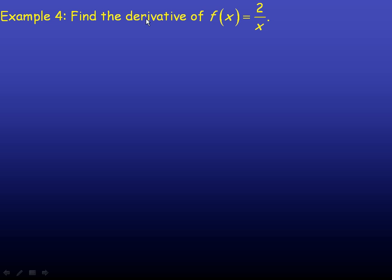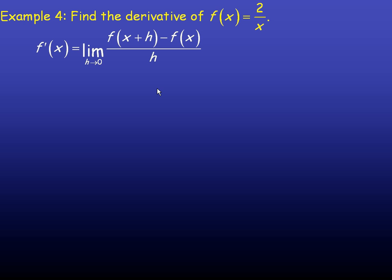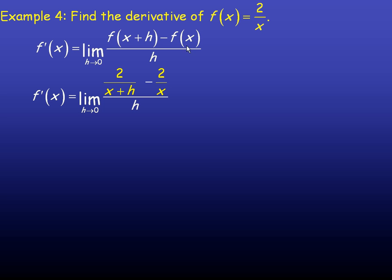In example 4, we're asked to find another derivative, of a different kind of function — a rational function, 2 over x. I'm still going to use the first principles definition of the derivative. So the function is 2 over whatever x is, and if we put x plus h in place of x, we get 2 over x plus h. We cannot yet substitute 0 in place of h, because h is still in the denominator — if we put 0 there, we get 2 over x minus 2 over x, which is 0 over 0, an indeterminate form.